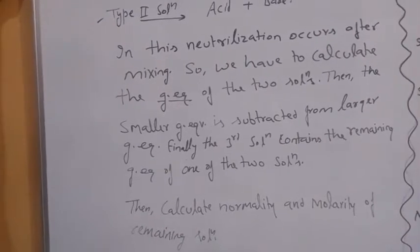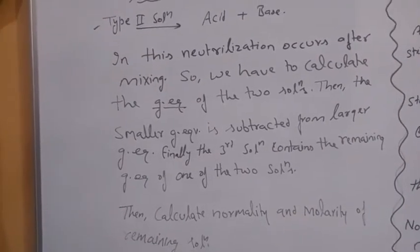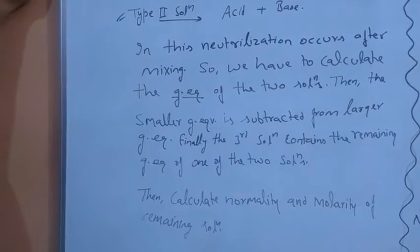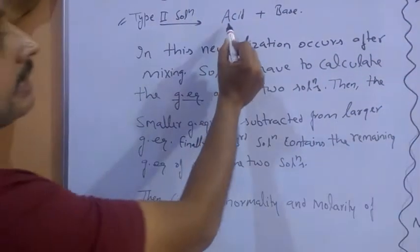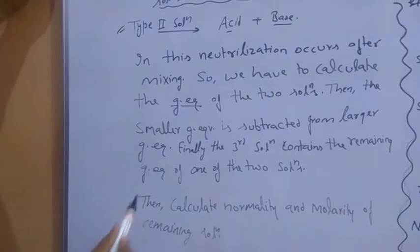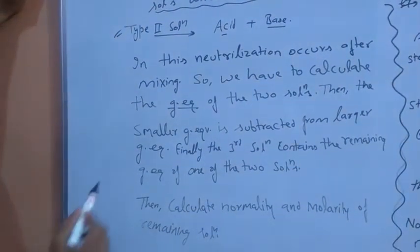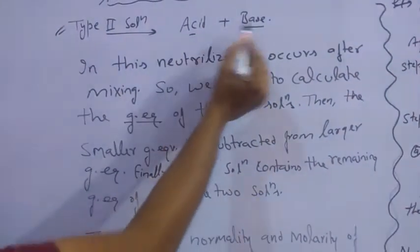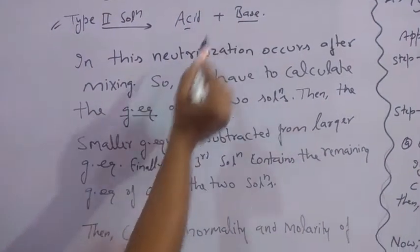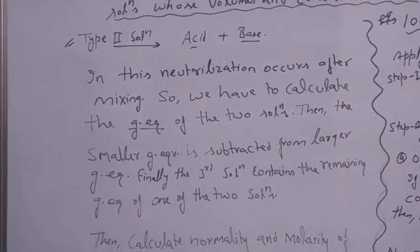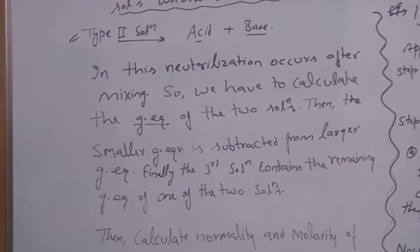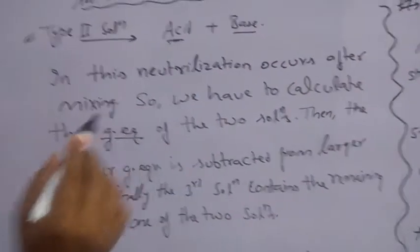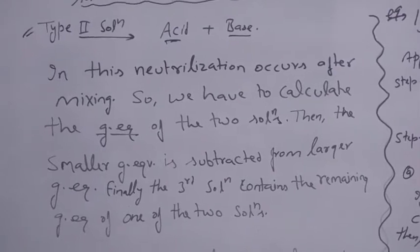Firstly, we have discussed a third solution which contains two solutions of same nature. In this case, Type 2 solutions, we are going to discuss a solution which contains one acid and one base. Because acid and base are provided, neutralization reaction will occur. During neutralization, the portion which is in smaller amount will neutralize another of the same amount as itself.